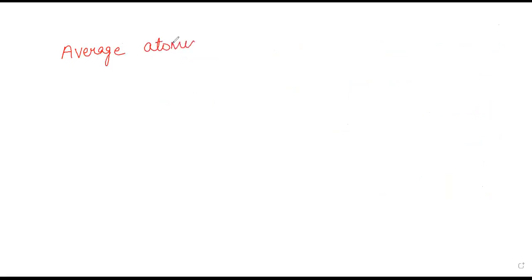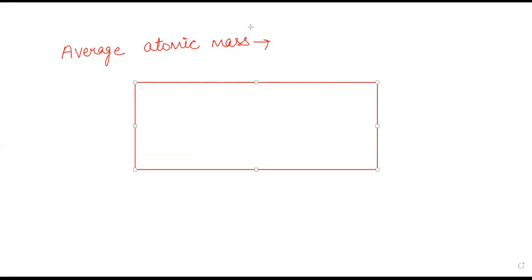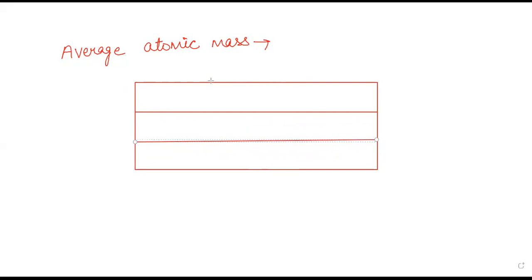Average atomic mass का मतलब क्या है? जैसे हम लोग carbon की बात करते हैं, हमारे पास carbon के different isotopes होते हैं। उनकी जो abundance है, वो भी अलग-अलग होती है। इसलिए हम लोग average value calculate करते हैं और उस element की एक atom का mass numerical purpose के लिए use करते हैं। जैसे book में hydrogen के isotopes के लिए एक table बनाया गया है — वो table बनाता हूँ और average atomic mass समझाता हूँ।